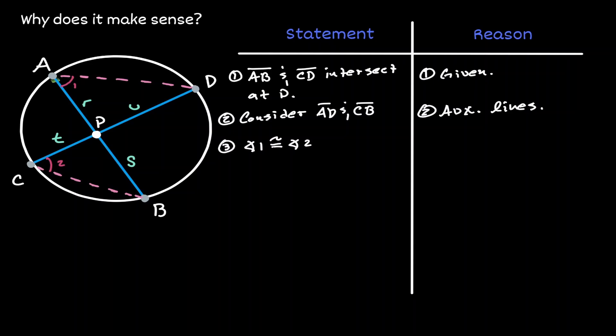Now if we consider the inscribed angle of B, notice that it intersects the arc of CA. The same can be said about the inscribed angle of D. It also intersects the arc of AC. So if we call this angle 3 and we call this angle 4, we can say that those two angles are congruent to each other because those inscribed angles intersected the same arc.